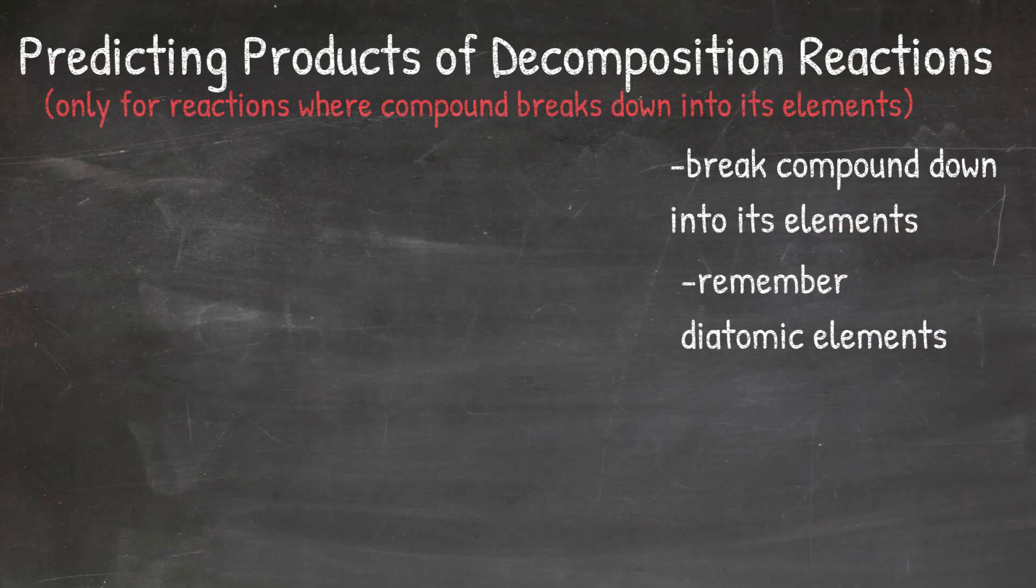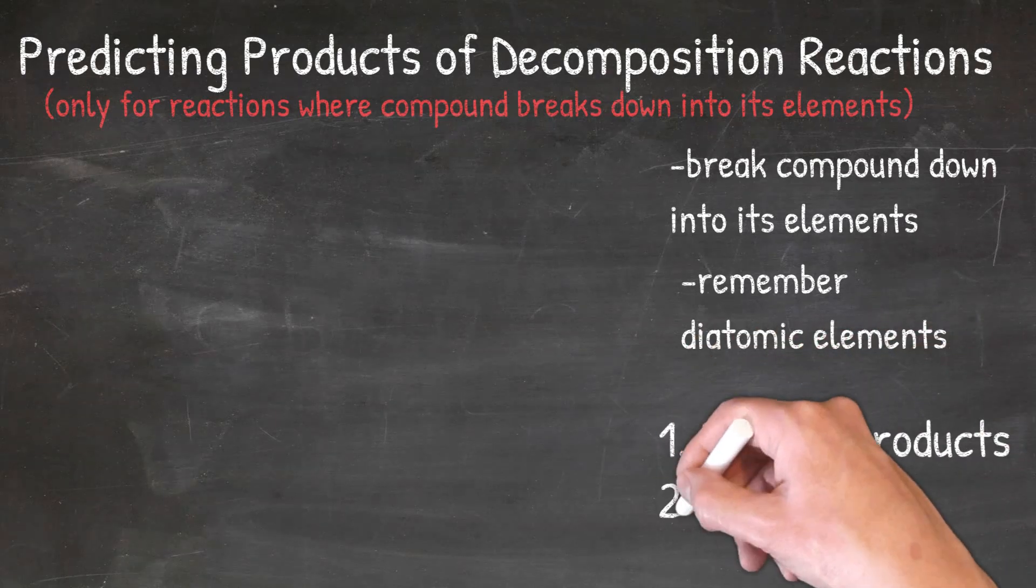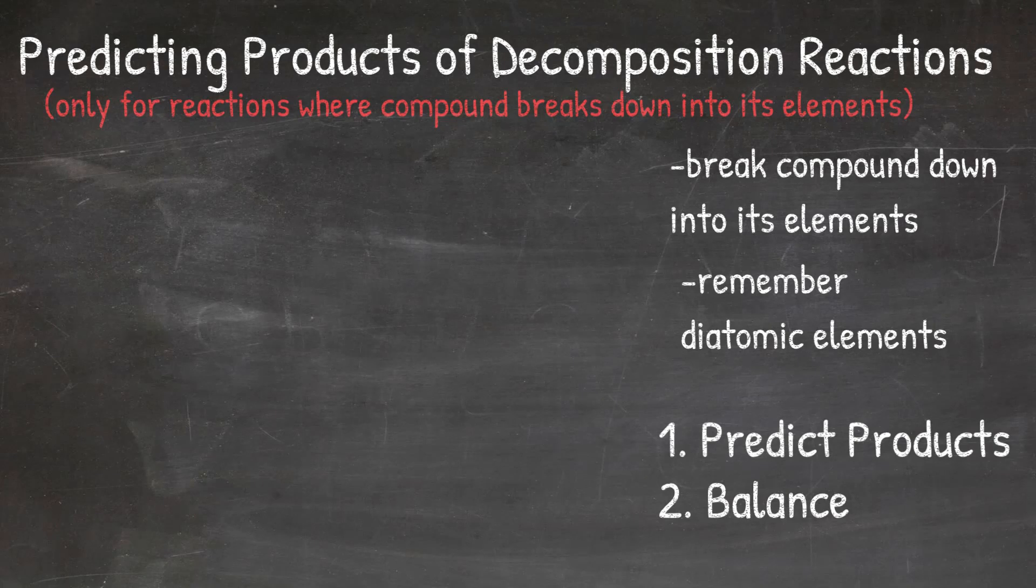Once we have predicted the products of our reaction, we can then go back and balance it. It is also important to remember that you should always predict the products first and then balance second.